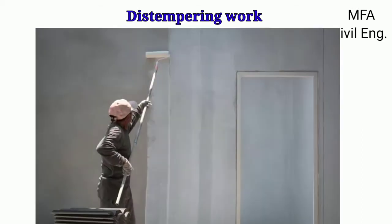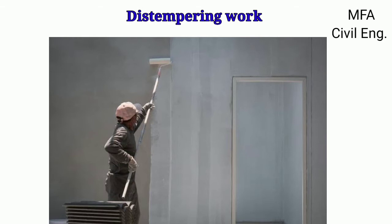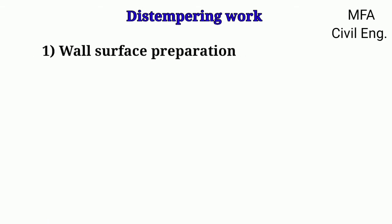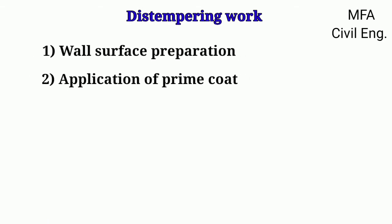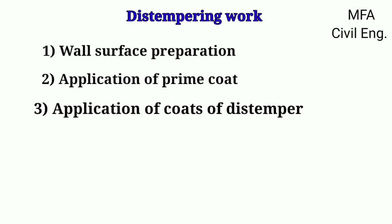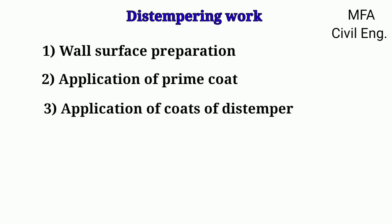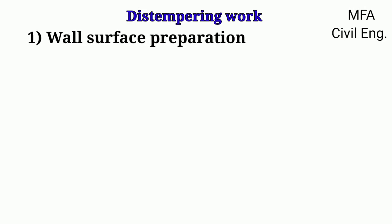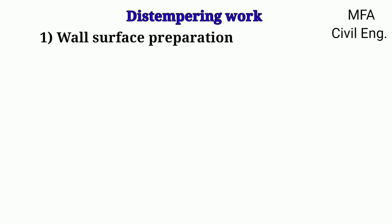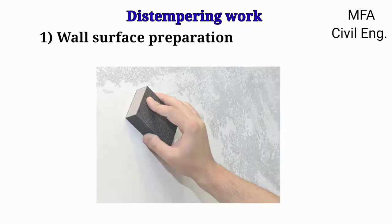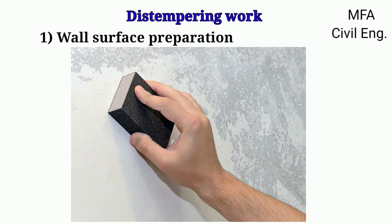The procedure of distempering includes various steps: wall surface preparation, application of a prime coat, and application of a coat of distemper. The procedure for wall surface preparation is as follows: the surface of the wall should be properly rubbed and cleaned before distempering.